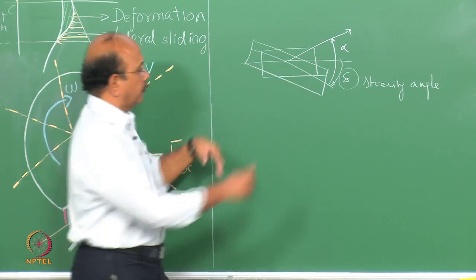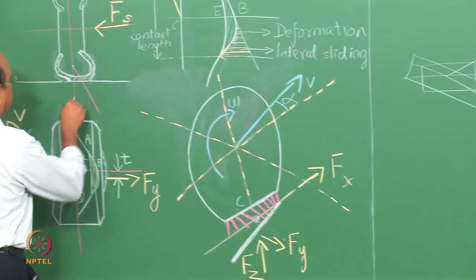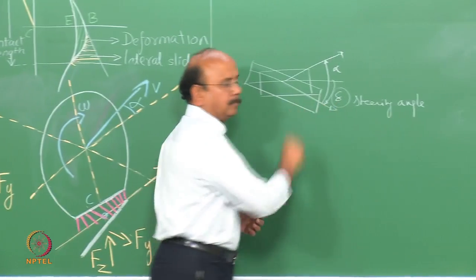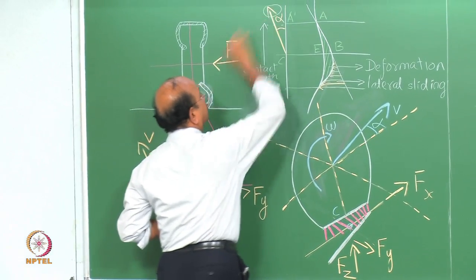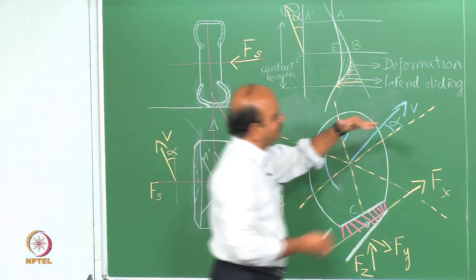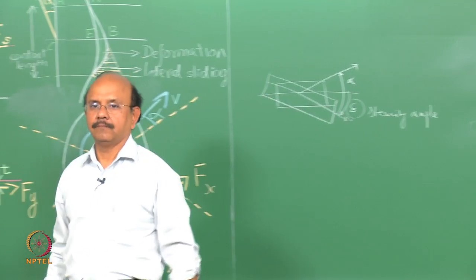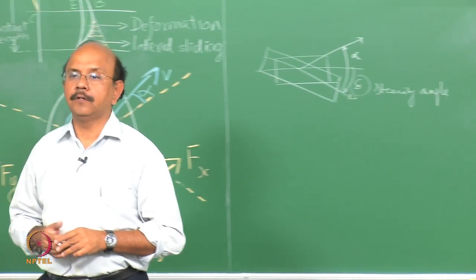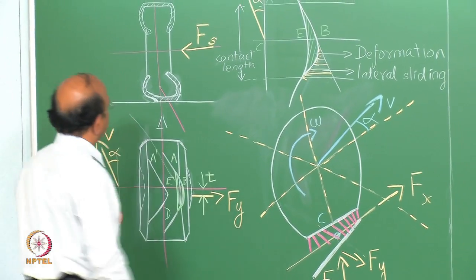We are going to view it from the plan view - from the bottom of the tyre - and see what this direction is. We are going to give a name to that: the slip angle. The global picture is that when we talk about slip angle, it is the angle from the steered angle. So you are sitting at the steered position and observing what is happening at that point.